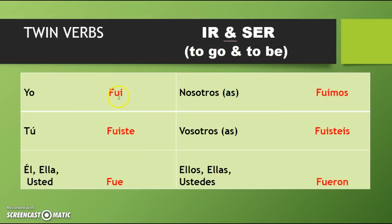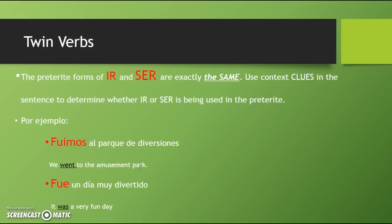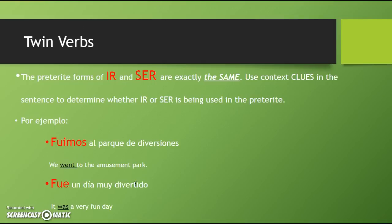Cuidado — careful. Remember our Spanish vowels: a, e, i, o, u. On the yo form, I have yo fui with an i, versus él/ella/usted which is fue — remember that Spanish e sounds more like an 'e' sound. Our twin verbs, ir and ser, conjugate exactly the same, hence twin verbs. We're going to have to use context clues and sentences to determine which verb we're using. For example, 'fuimos al parque de diversiones' — we went to the amusement park, using ir. Versus 'fue un día muy divertido' — it was a fun day, using ser en el pretérito.